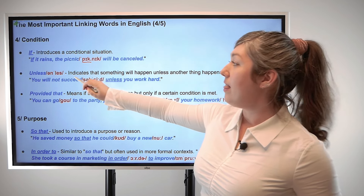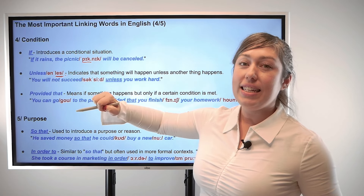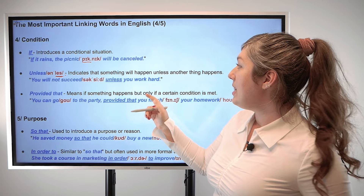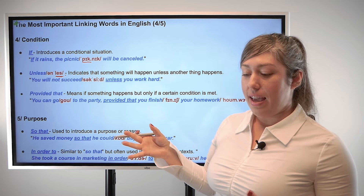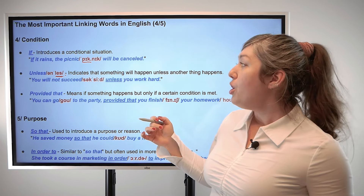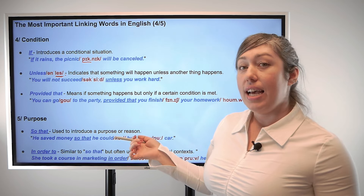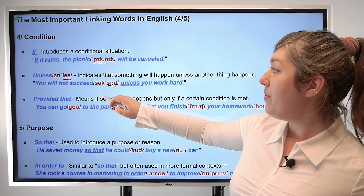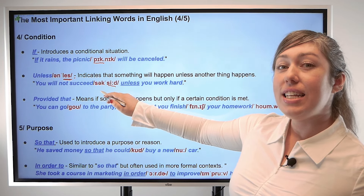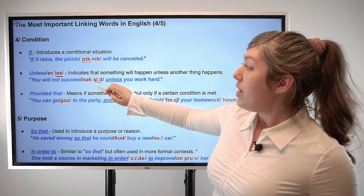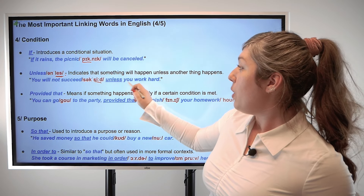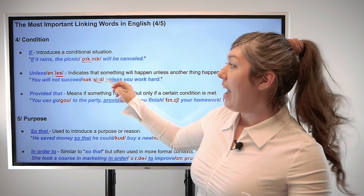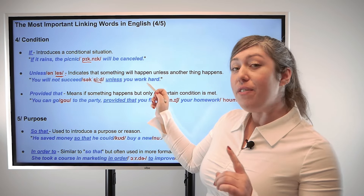Next we have 'unless,' with emphasis on the second syllable, unless. This means that something will happen unless another thing happens. For example, you will not succeed unless you work hard. This means you have to work hard if you want to succeed, and you will not succeed if you don't work hard.